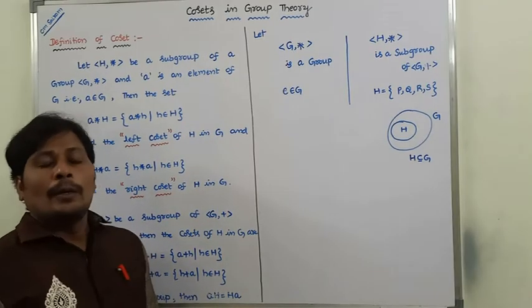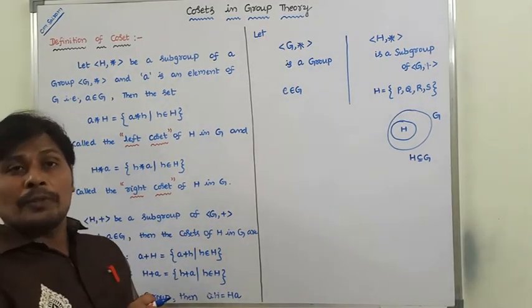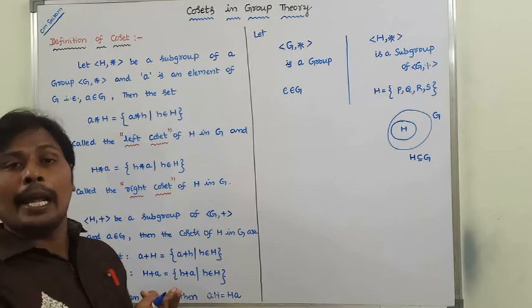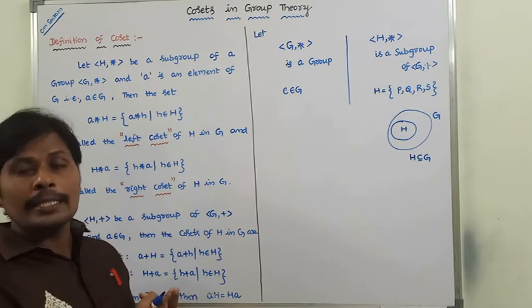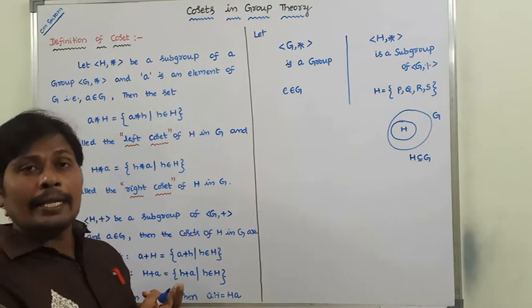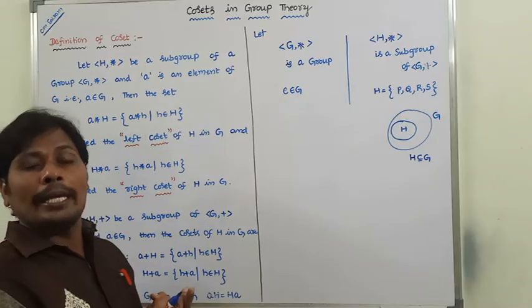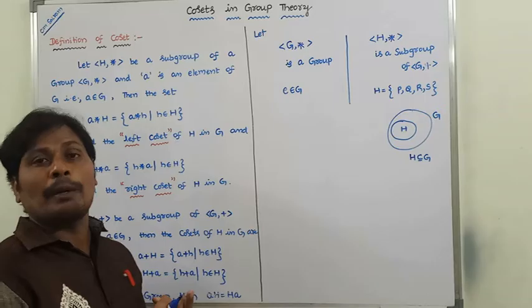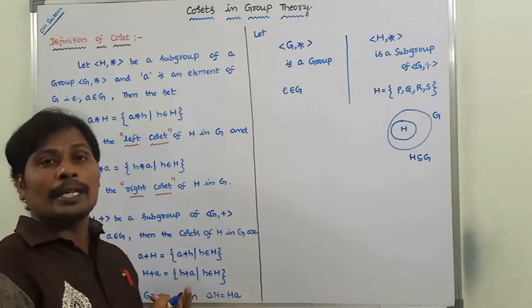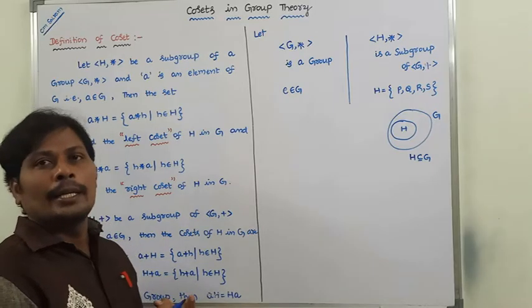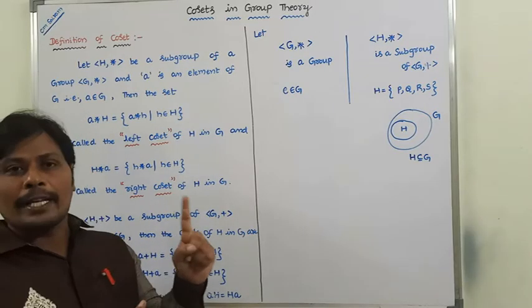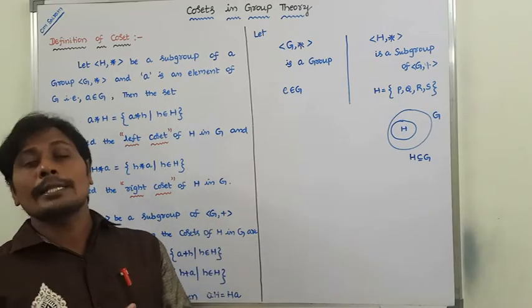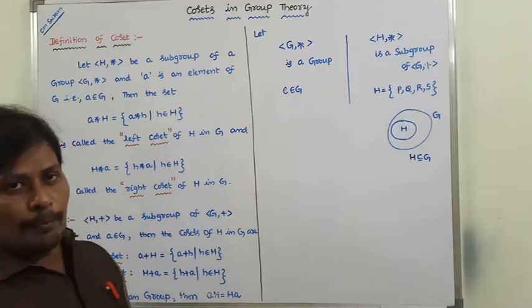This is the definition of a coset with respect to the binary operation star and with respect to binary operation plus. We have already observed that if G is an abelian group, then A·H equals H·A with respect to the binary operation star. That is the first important property. Now we can go to the second important property.